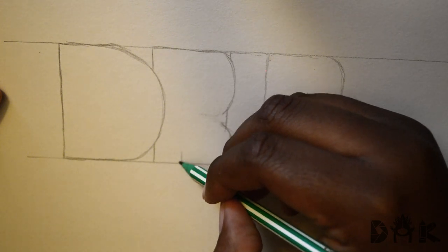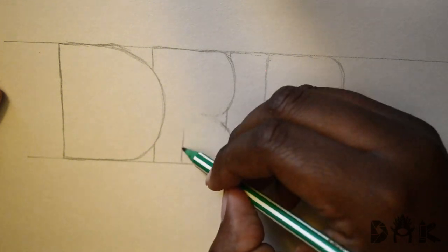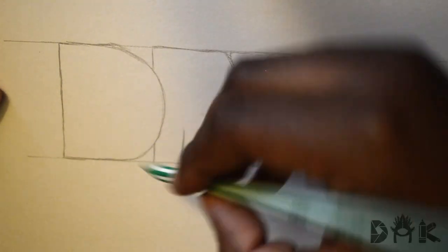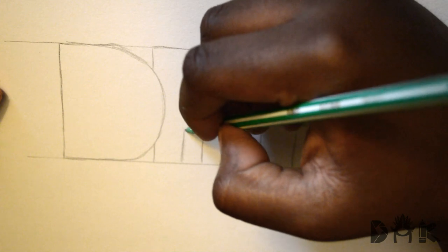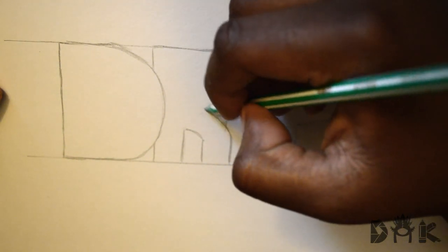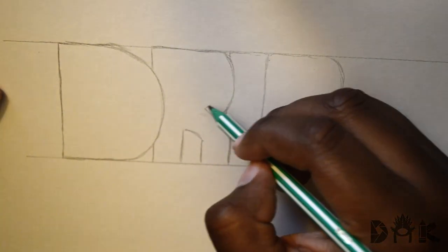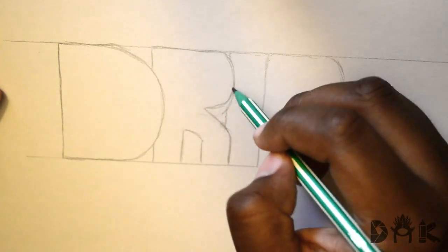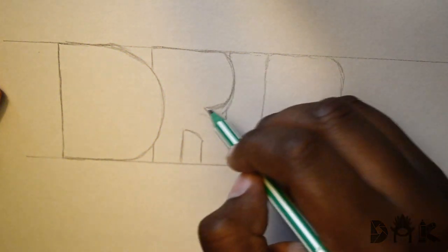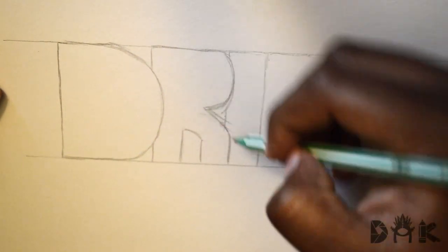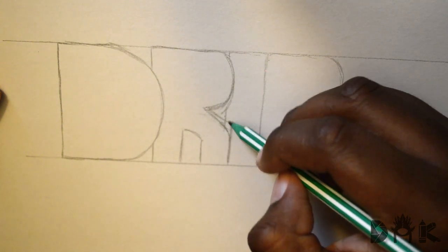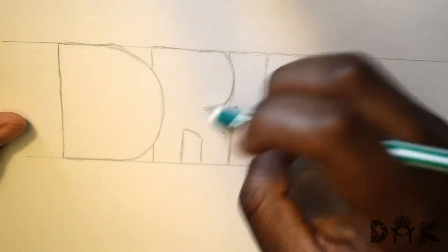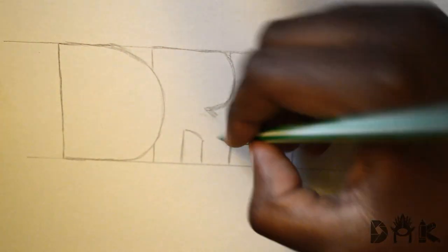And there you go. Erase this real quick, fix it, make it look a little more clean. Draw the line up and make a curve, angular bottom, and then you're gonna follow that line up so that makes it look more legible.